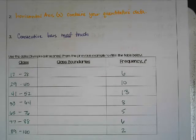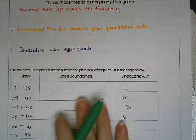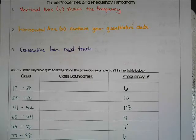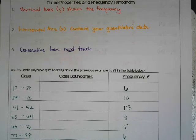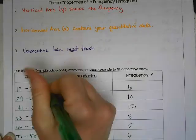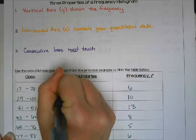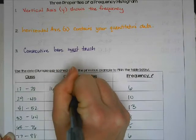Okay, so now for the class boundaries, because our consecutive bars have to touch, and we actually had 17 as a score and 28 as a score, then the bars themselves can't be the numbers 17 and 28. So when we make our class boundaries, we just go down by a half and up by a half, so this is going to be 16.5 and 28.5.